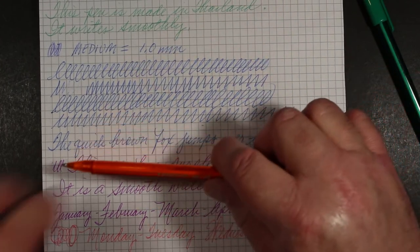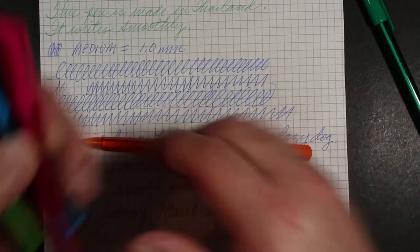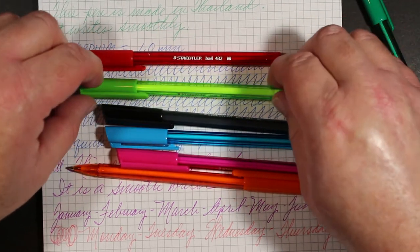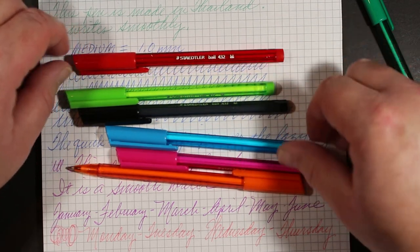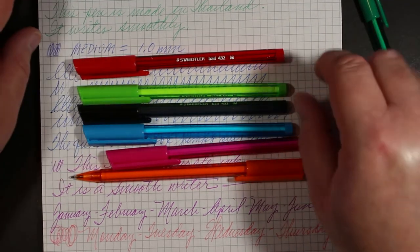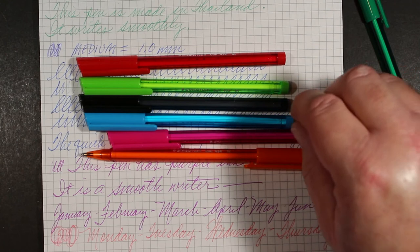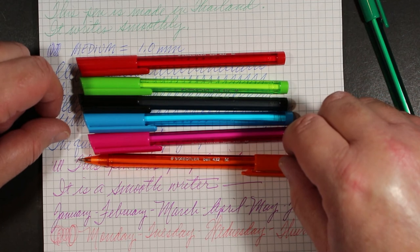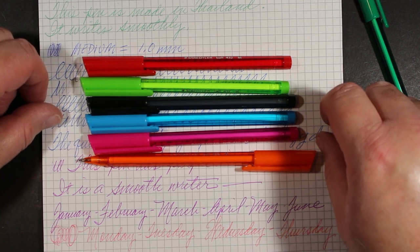So thank you for spending some time with me as we checked out this rainbow of colors from the Staedtler company. They're offering for a ballpoint triangular pen, 432. And thanks again, Sue, for sending these my way to try. And it will be fun to write things in different colors for different friends. So if you like what I do here on Always Analog, please subscribe, share, and hit the like button. And I'll see you again real soon here on Always Analog.